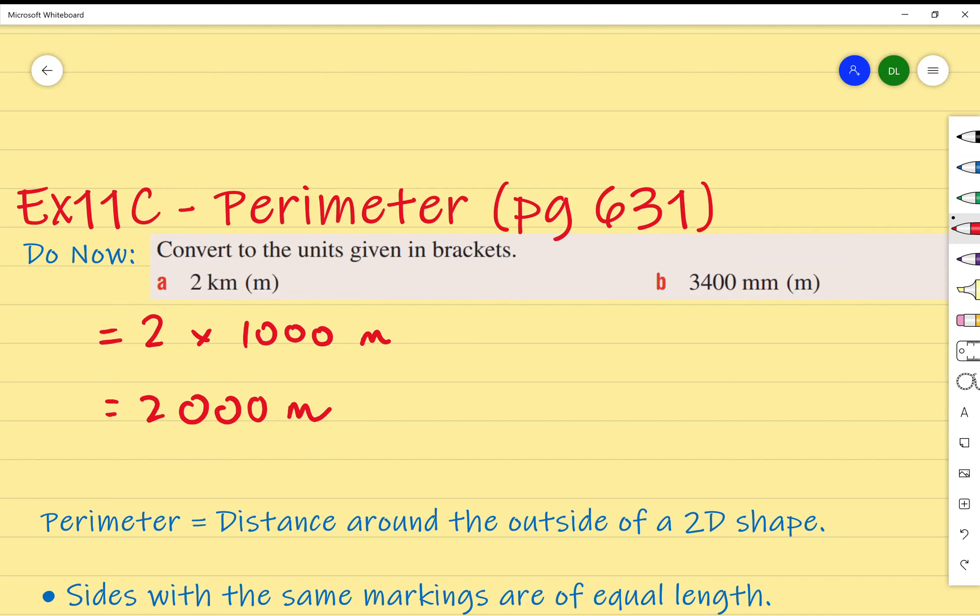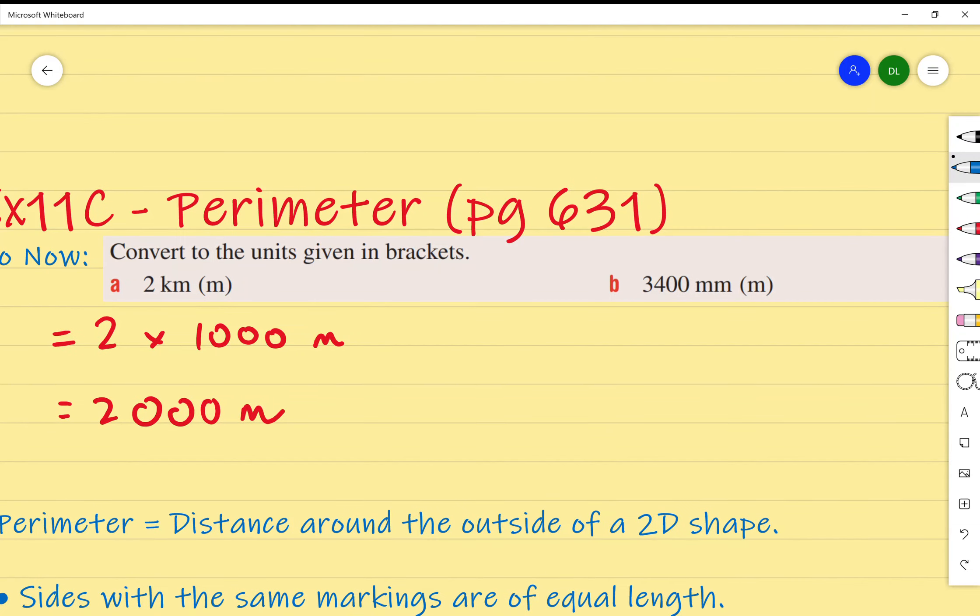Next: 3400 millimeters in meters. What's the unit in the middle between millimeters and meters? Centimeters. We need to get to centimeters first. How many millimeters in a centimeter? It's 10. Because we're trying to get to a larger unit, we need less of them, so we divide by 10. 3400 divided by 10 is 340 centimeters.